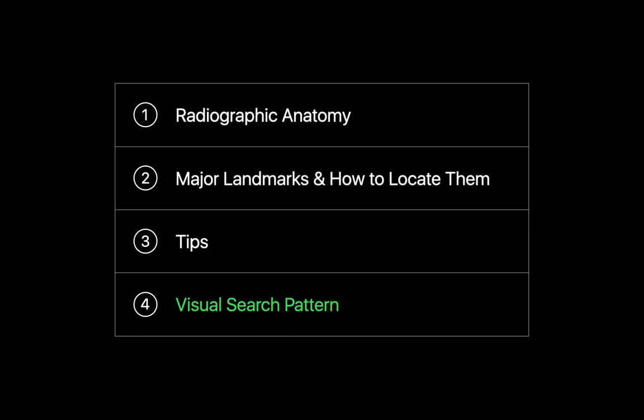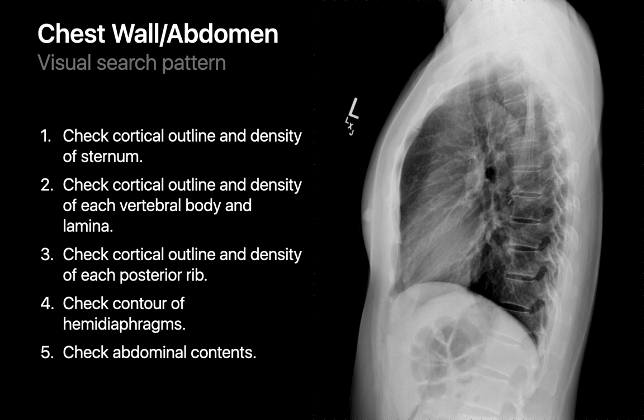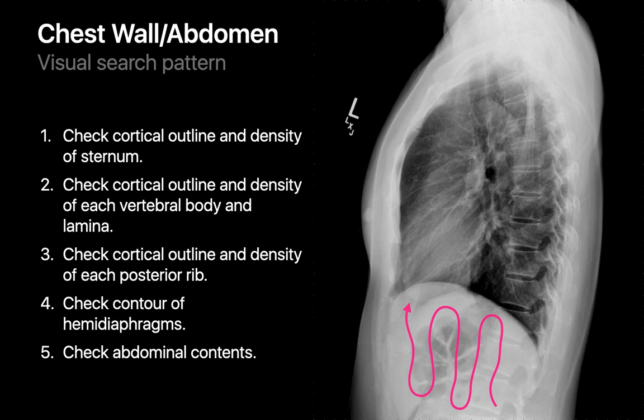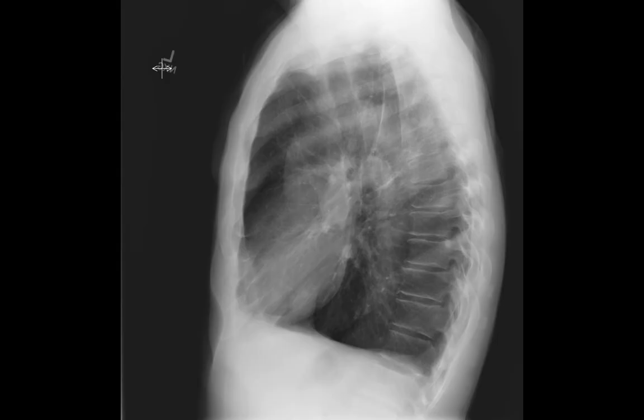The final part of the talk illustrates a visual search pattern for reading a lateral chest radiograph. Start with the chest wall and abdomen: check the cortical margins and density of the sternum and manubrium, then each vertebral body and its laminae, then each set of posterior ribs, and finally the contour of the hemidiaphragms including the upper abdominal contents below. During this part you may find flattened hemidiaphragms indicating COPD in older patients, with enlarged pulmonary arteries also potentially present.